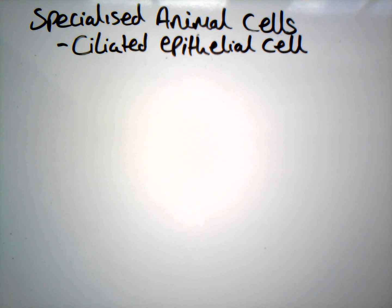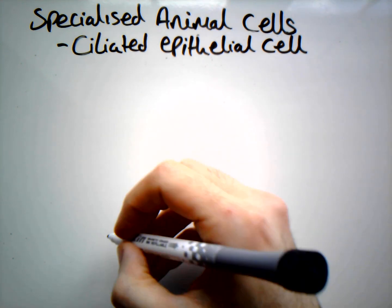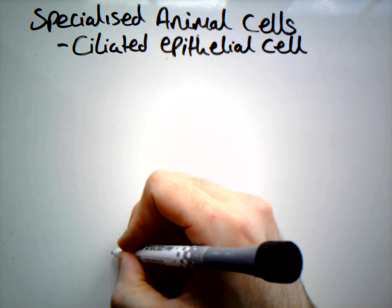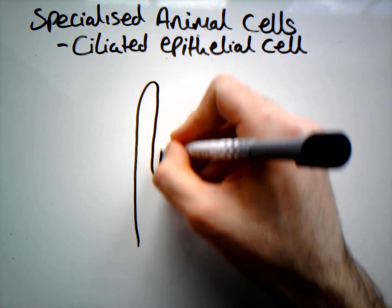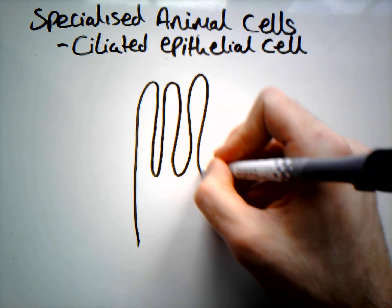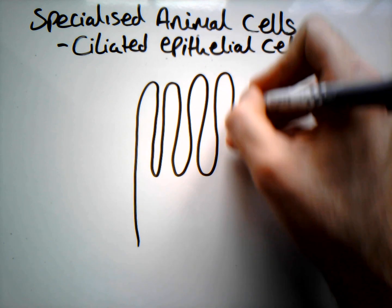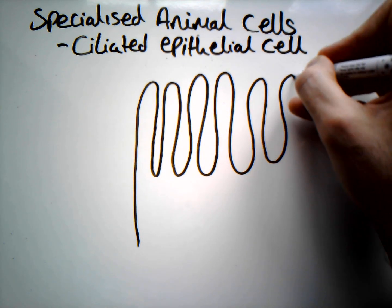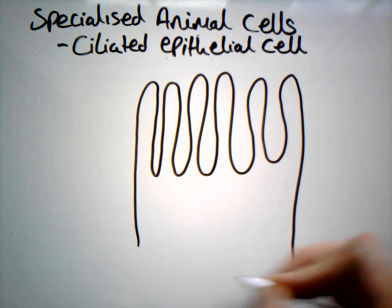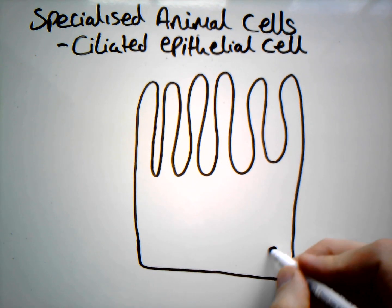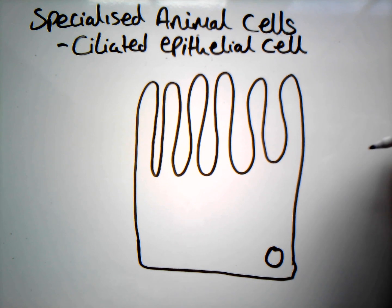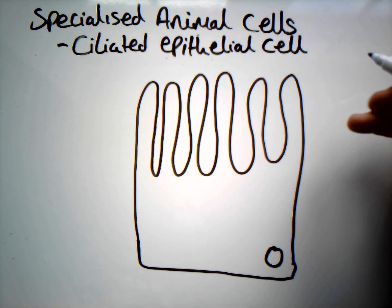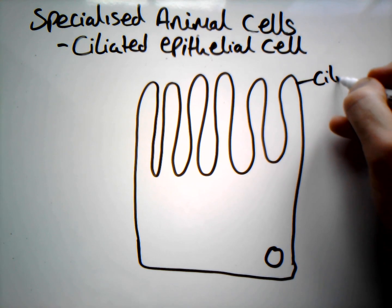Let's talk about ciliated epithelial cells. They tend to look like a normal cell except for one key difference — they have these long hair-like structures on them called cilia. They still have things like a nucleus and mitochondria and all the normal components of an animal cell, but they also have these cilia.